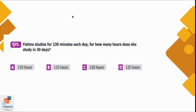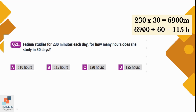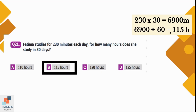Question number 21: Fatima studies for 230 minutes each day. For how many hours does she study in 30 days? To find the total minutes, we multiply 230 by 30, which equals 6,900 minutes. To convert minutes into hours, we divide by 60, which equals 115 hours. Option B is the correct option.